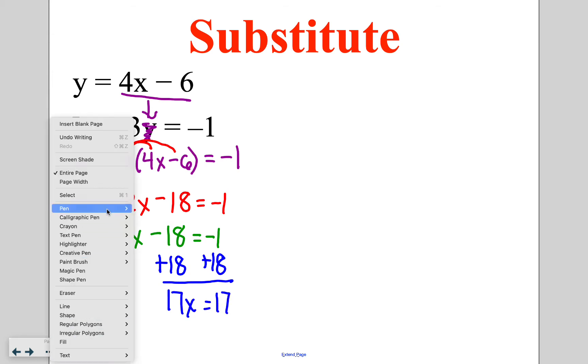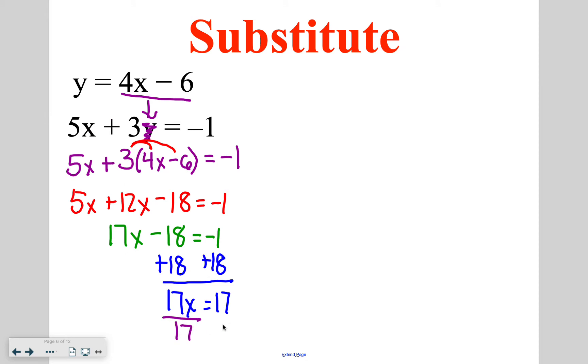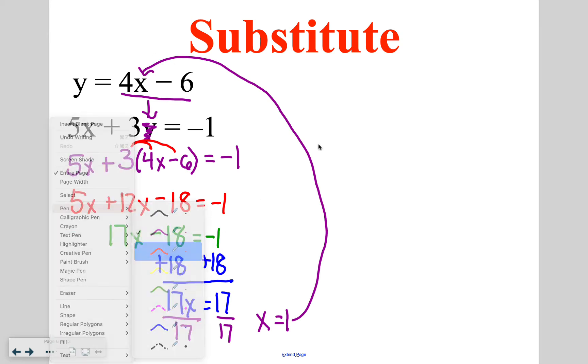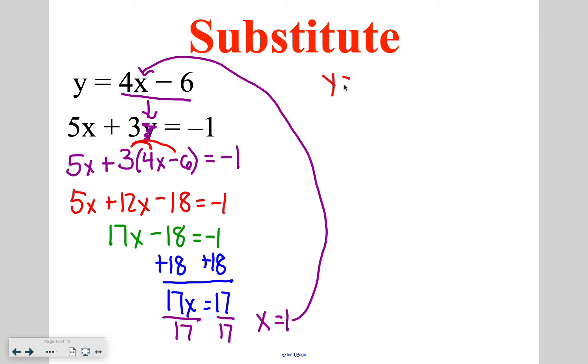And I'm going to solve by dividing by 17 on both sides to give me that x is equal to 1. So at this point, I've solved part of my problem. I know what the x-coordinate is. I now am going to plug that back in to either equation. I'm going to choose the first one to solve for the second variable. So now I'm going to say y is equal to 4 times 1 minus 6. 4 times 1 is 4, subtracting 6, giving me y is equal to negative 2.